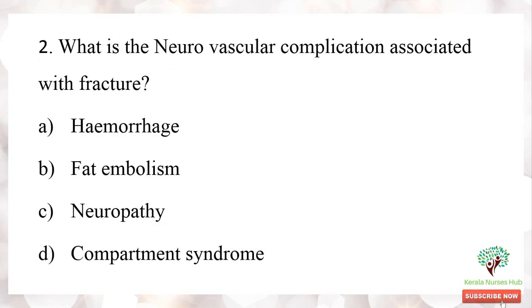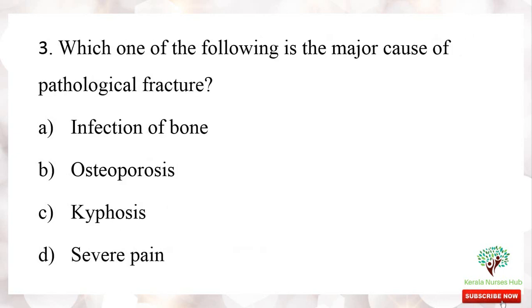Second question: what is the neurovascular complication associated with fracture? The options are hemorrhage, fat embolism, neuropathy, and compartment syndrome. The neurovascular complication associated with fracture is compartment syndrome. The remaining options are also complications, but they are not neurovascular complications.